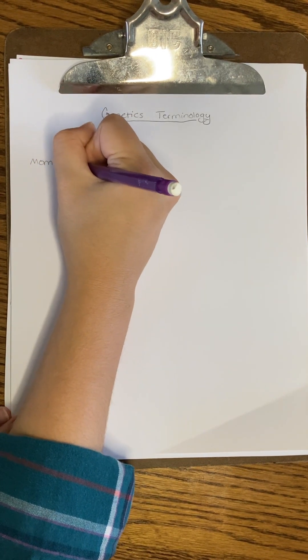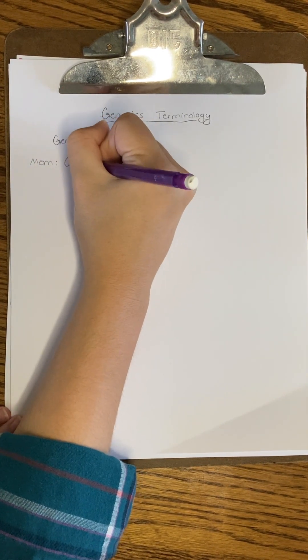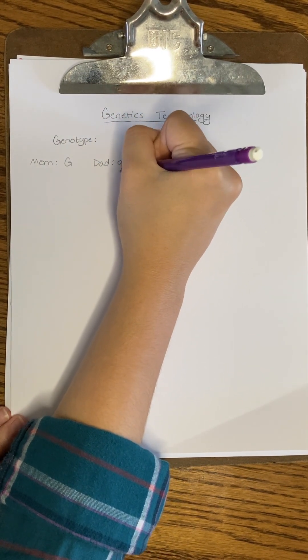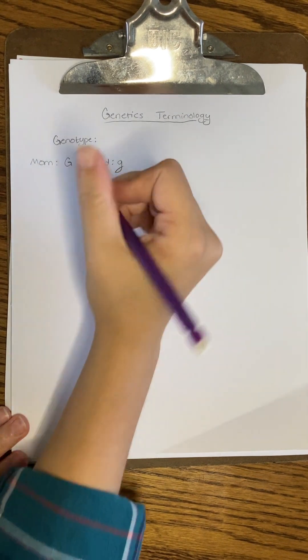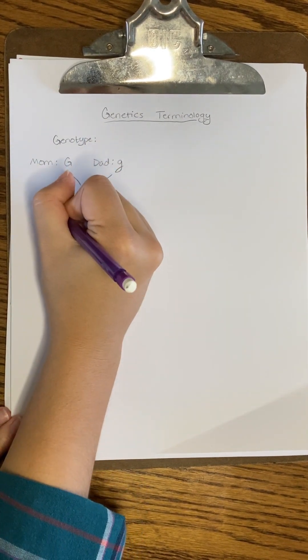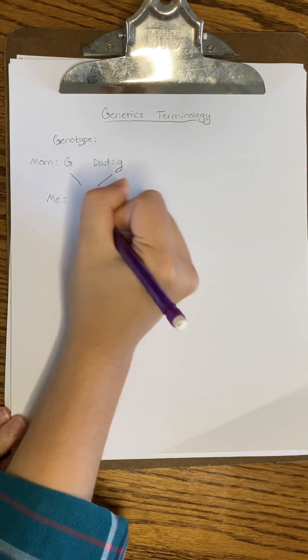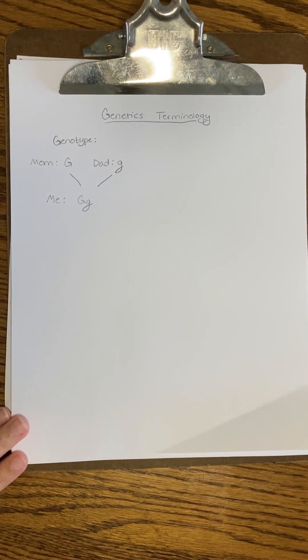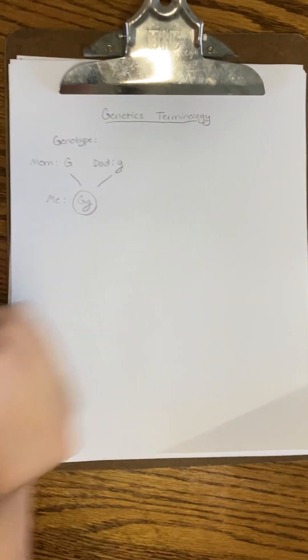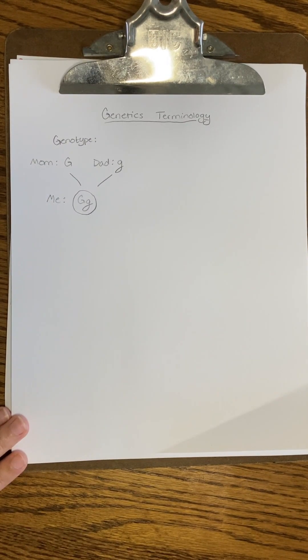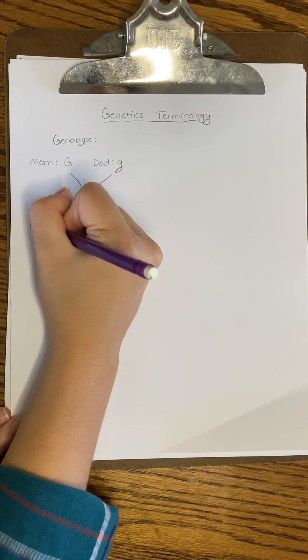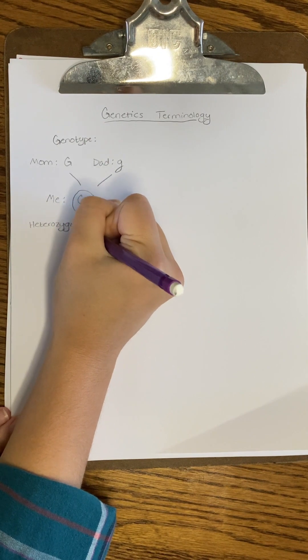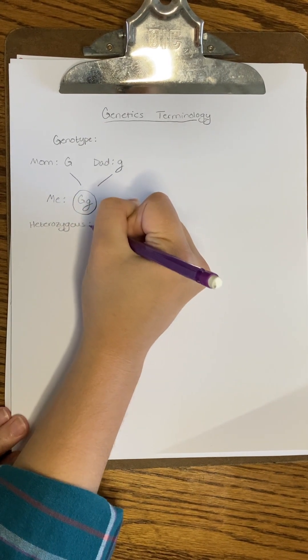Let's use the letter G to represent the allele for brown hair. If my mom donates a dominant allele for brown hair, and my dad donates a recessive allele for some other hair color, maybe blonde, then I would have a genotype of capital G, lowercase g. This specific genotype is called heterozygous because my two alleles are not identical, and the prefix hetero means different.